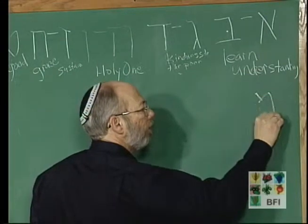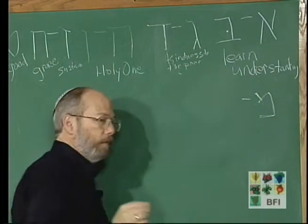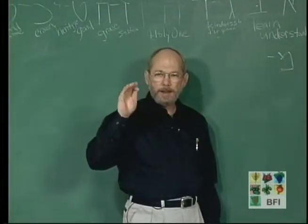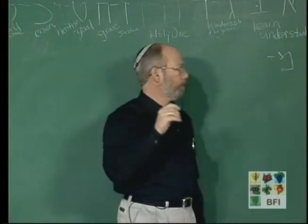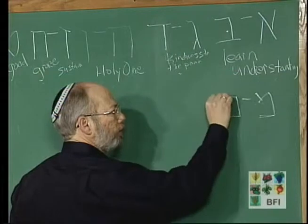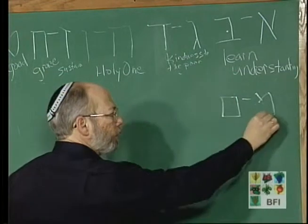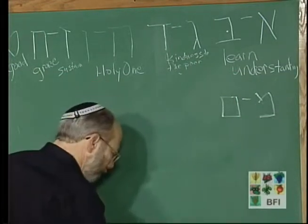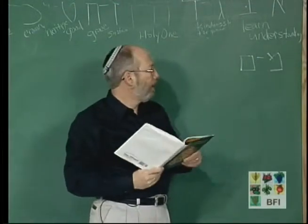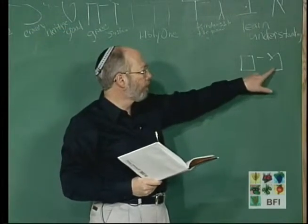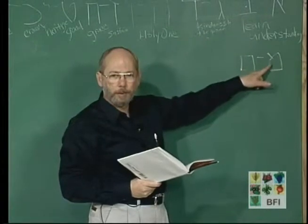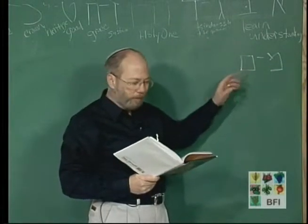The letter MIM. There are certain letters in Hebrew that have a beginning form and then a final form. MIM is one of those. Its final form looks very much just like a box. One of the MIMs — the initial MIM — is open; it has an open space in it. But the final MIM is closed.